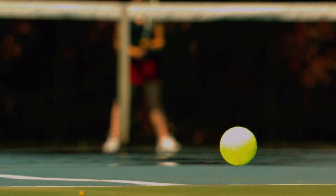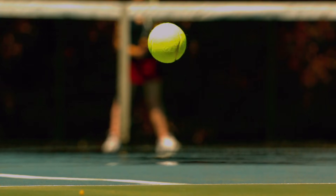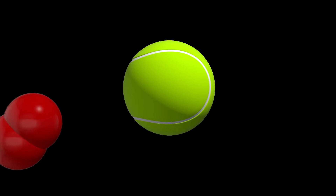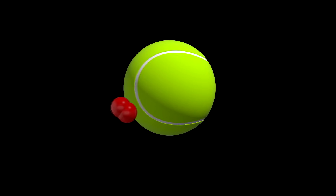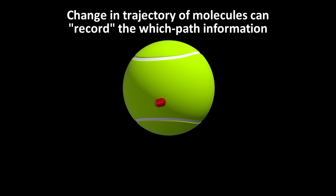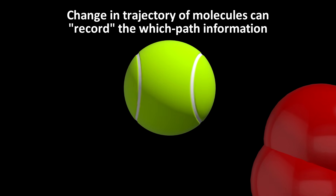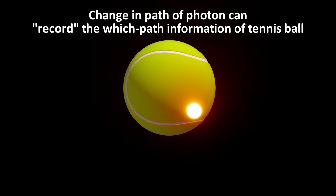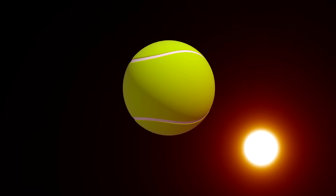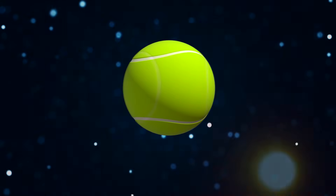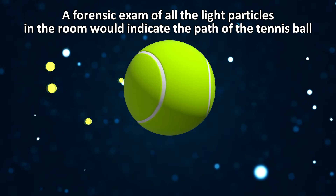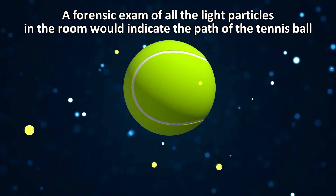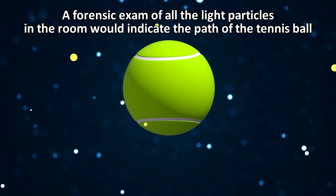Let's look at what it would take to isolate a tennis ball. Remember, to do this, we have to make sure that there is no record made anywhere in the universe of which path the tennis ball follows. First, we have to remove all the air and photons in the experiment. Why? If a photon or air molecule bounces off the tennis ball, then it has potentially recorded the path of the tennis ball. For example, if the photon reflects off the ball, then that could be a measurement, because the path of the photon would be changed, and the bounced path of the photon has recorded the path information of the ball. Potentially, someone or the universe could examine the paths of all the photons in the room, find out how they were affected by the path of the tennis ball, and find out from that information the path that the tennis ball took.